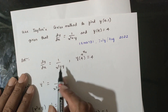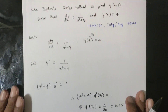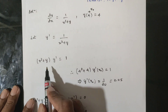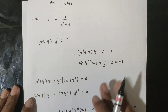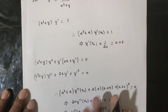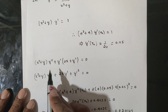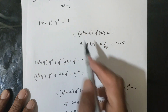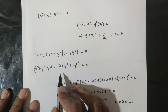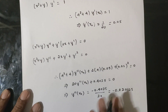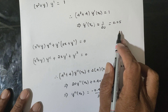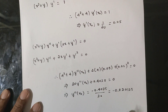Question 1: dy/dx equals 1 divided by (x² + y), so y-dash equals 1/(x² + y). Differentiating: x² plus y into y double-dash plus 2x·y-dash minus y-dash squared equals 0. With x₀ = 4, x² = 16, substituting gives y double-dash. The Taylor series formula is then applied to find the answer.